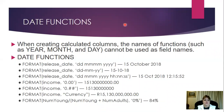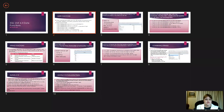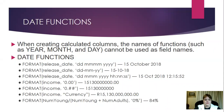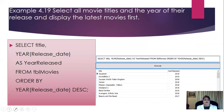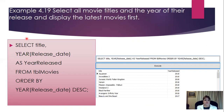Remember, if you have any questions you are welcome to ask in the chat and I will be checking it every now and then. The next query we're going to look at: select all movie titles and the year of their release, and display the latest movies first. I don't want all fields — I want the movie title field and the year of the release date. I'm not going to say just YEAR; I'll say YEAR(release_date) to get a specific year.